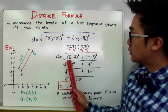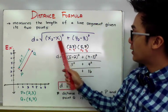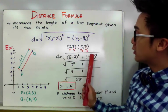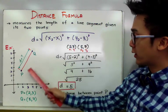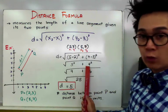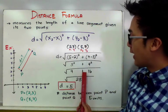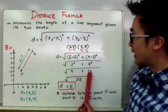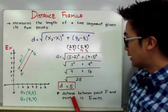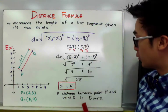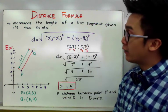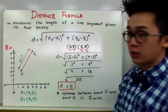We have d is equal to the square root of (5 minus 2) squared plus (7 minus 3) squared. By simplifying, we have the square root of 3 squared plus 4 squared, which gives us 9 plus 16, equal to 25. So therefore, the square root of 25, which is 5, is the distance between point P and point Q. This is how we use the distance formula in this particular problem.